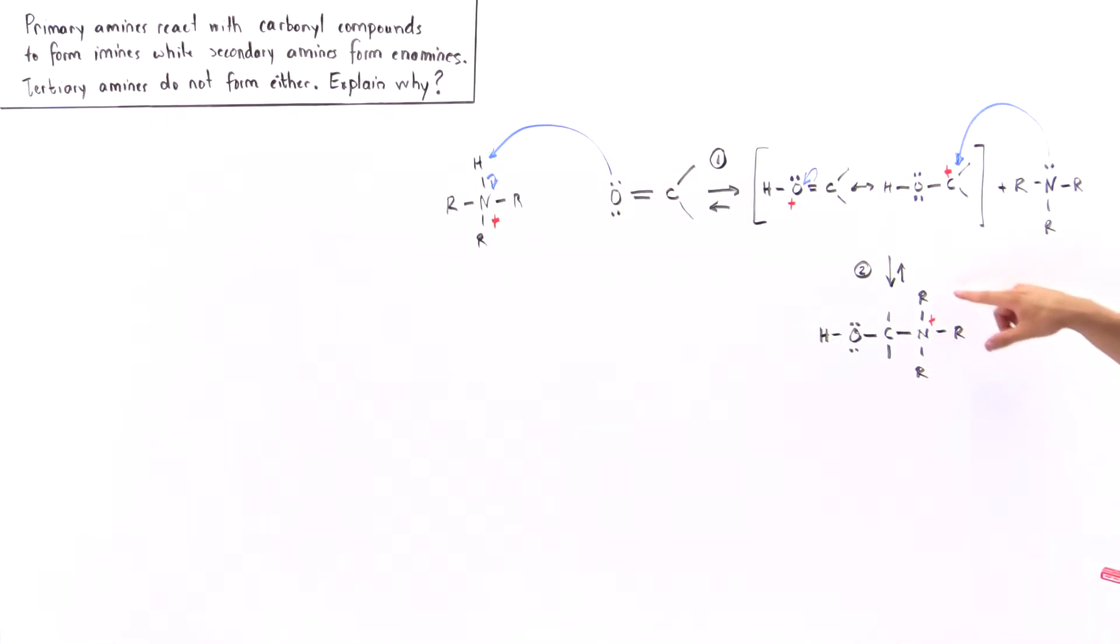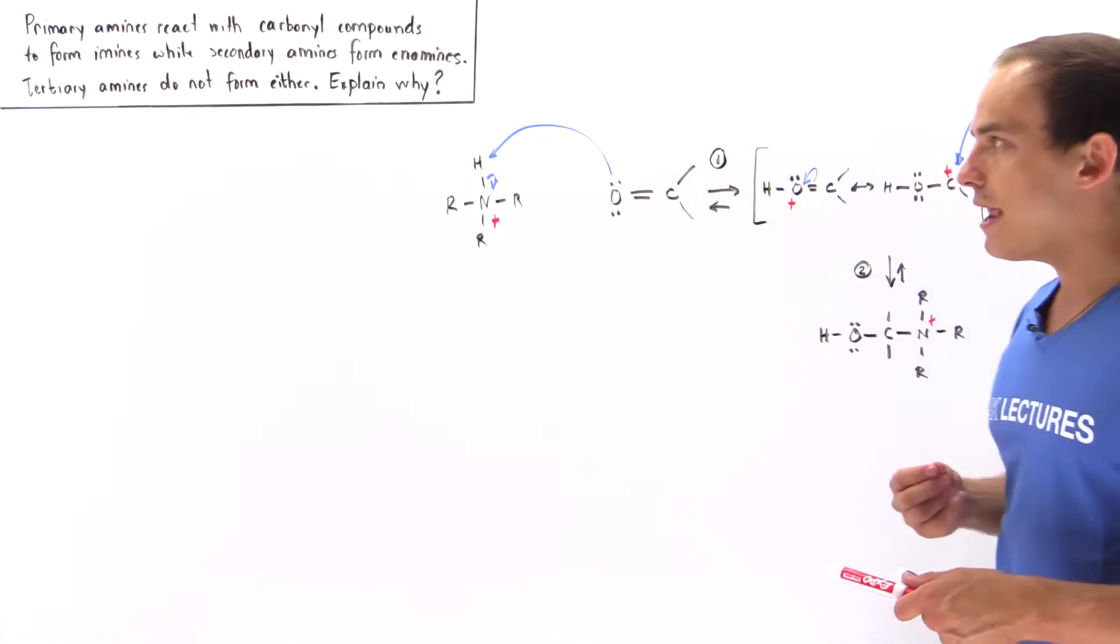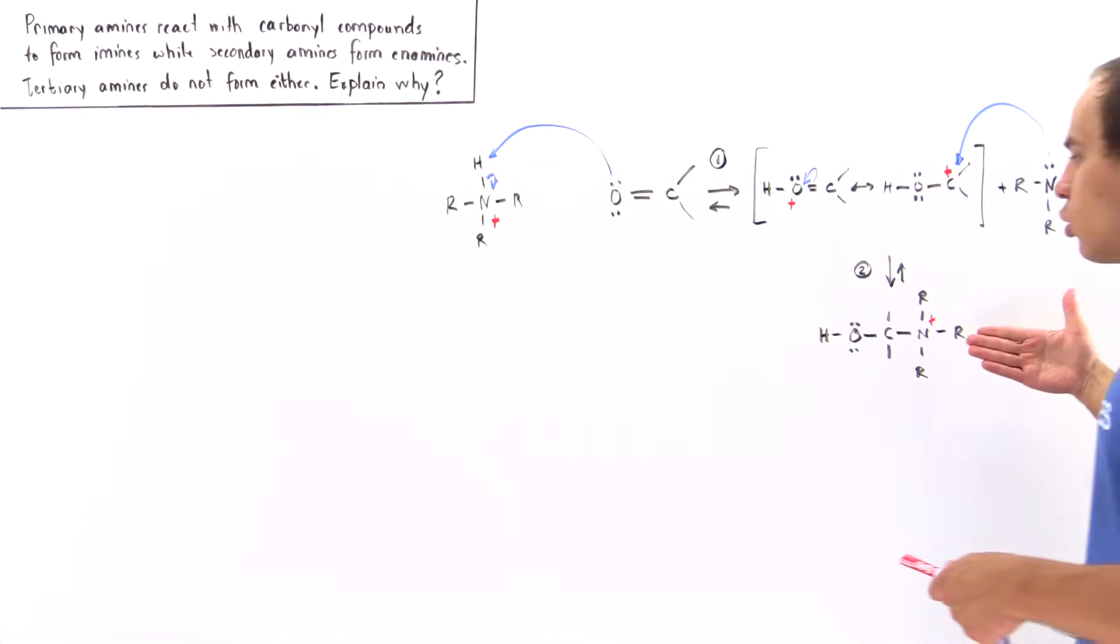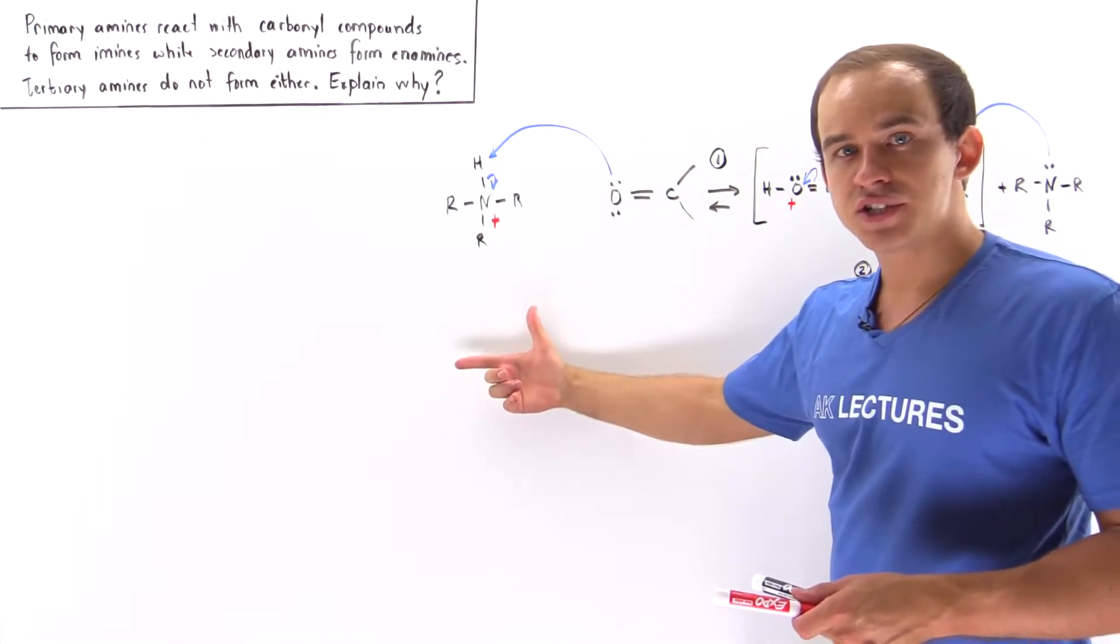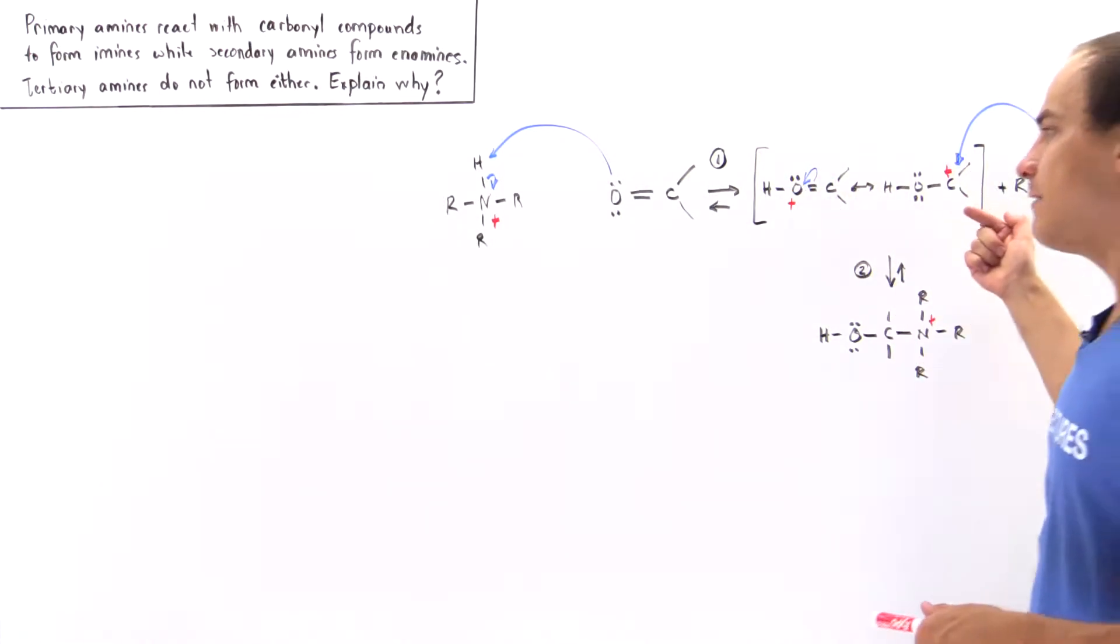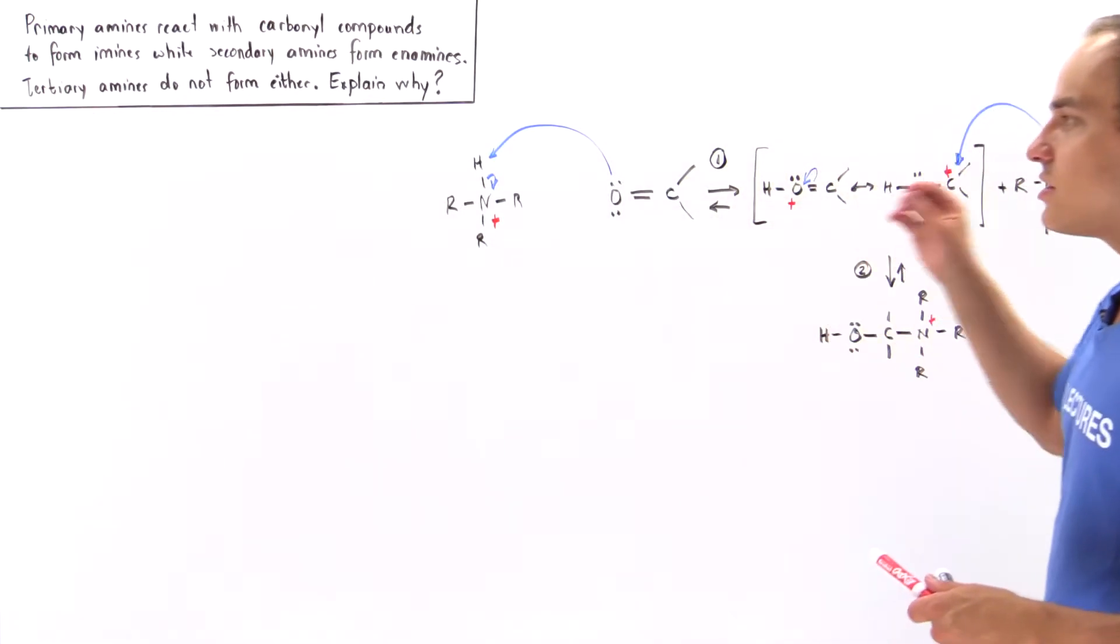But in this case, the nitrogen does not have a spare hydrogen, because we are dealing with a tertiary amine. And so because we do not have any H atom on either side of this nitrogen, we cannot actually undergo the first deprotonation step as we can in the formation of the imine and the enamine. And so that means, because we cannot go in the deprotonation step, the only other step that we have is to go in reverse. And so what happens is, we go back to this intermediate and eventually we reform these reactants.